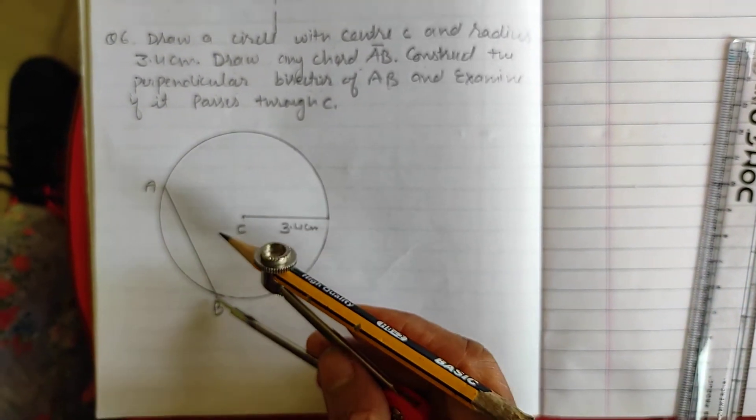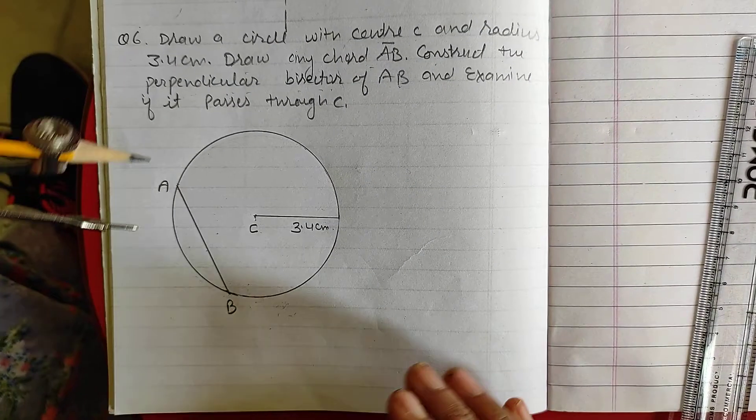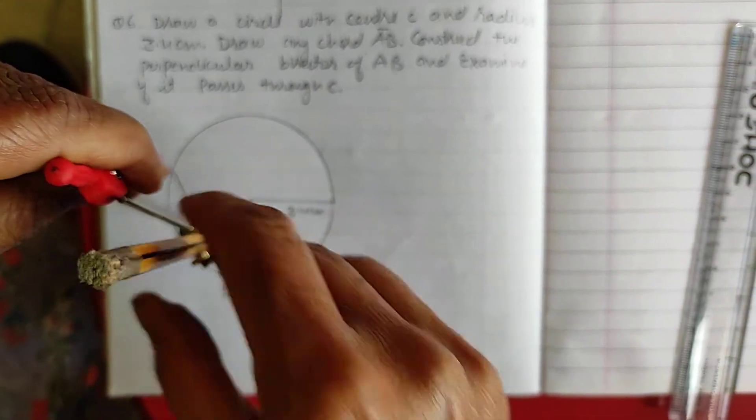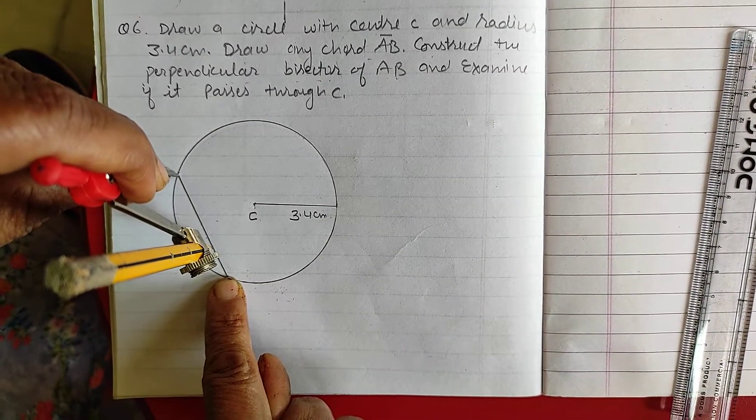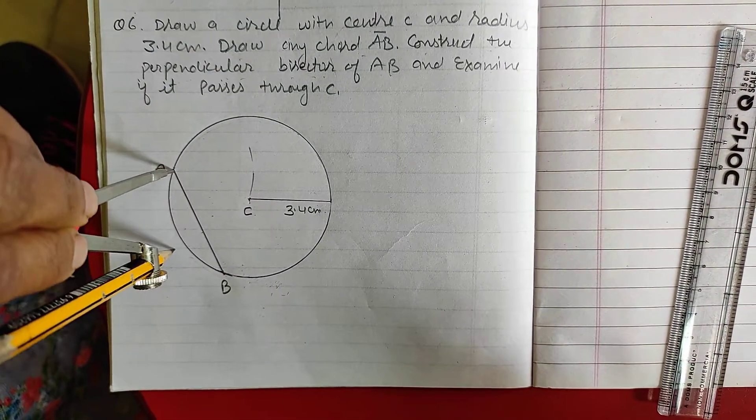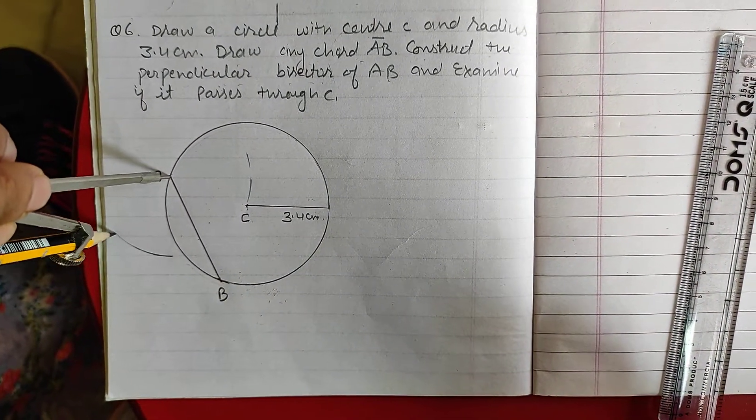Now, put the tip of the compass at point A and open the compass more than half of AB. AB ka jo half hoga, usse thodi si jyada apne leheni hai and draw arc on both side of AB.